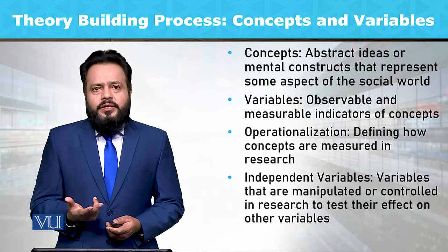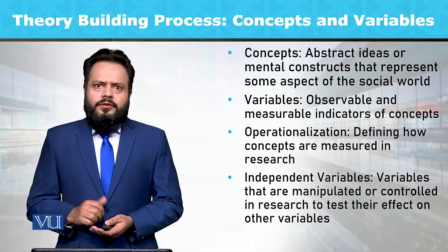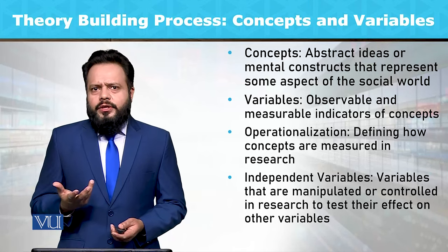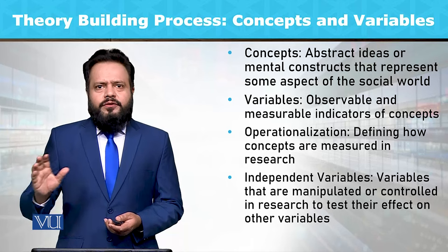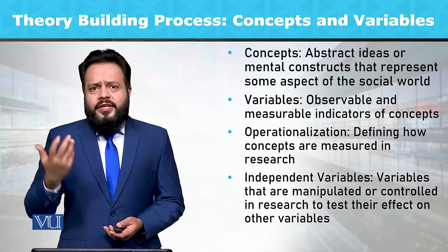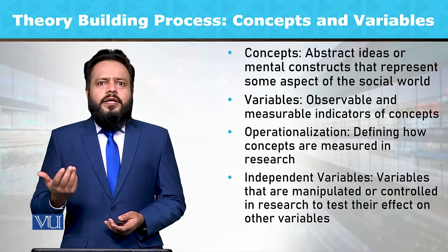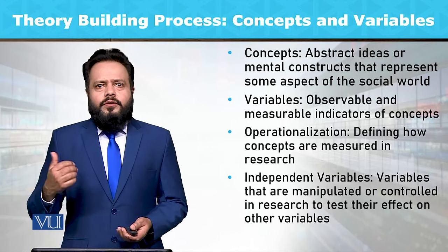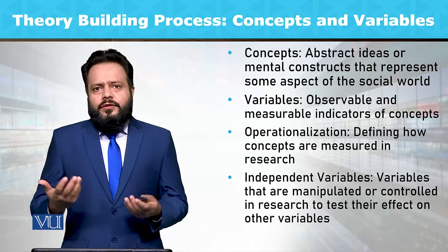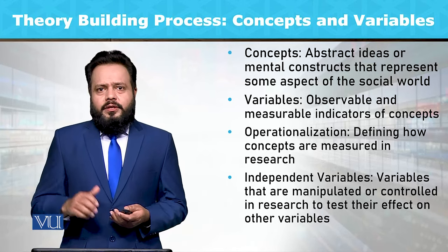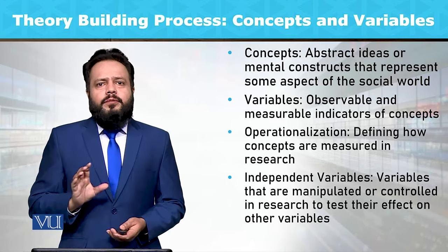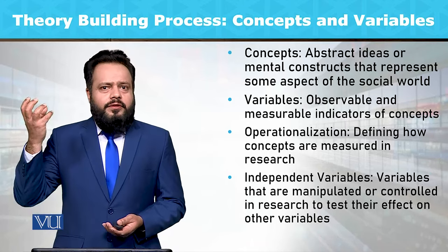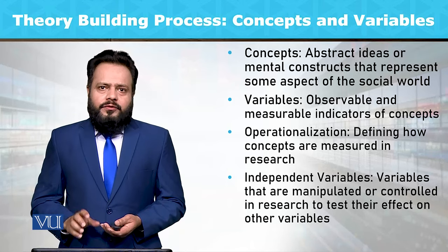So defining how the concepts are measured in the research — is ko hum ek misal ke zariye samajhne ki koshish karte hain, jis mein hum happiness lete hain. To happiness ya khushi kis cheez ko kaha jayega? Ye ek abstract concept hai, ek abstract idea hai. Agar hum is ko different variables mein convert karne ki koshish karein, to hum ye keh sakti hain ke kisi ko khayal mein khushi mil sakti hai, kisi ko movie dekhne mein, kisi ko khana khane mein. To happiness ko concretely different variables ke andar convert kiya ja sakta hai, aur iske different indicators ke zariye hum happiness ko reflect kar sakti hain, jo pehle ek abstract idea ke tor pe humare zehen mein maujood thi.